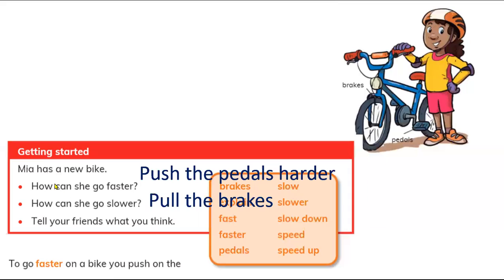Here is an activity. Mia got a new bike. How can she go faster? Push the pedals harder. How can she go slower? Pull the brakes. So two forces make the bike slow and fast. To go faster on a bike you push on the pedals.